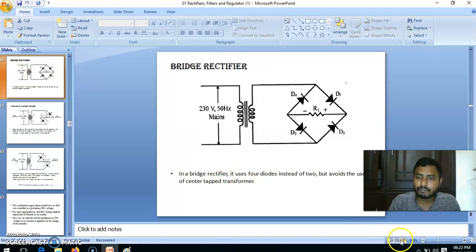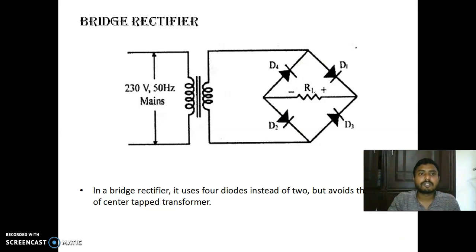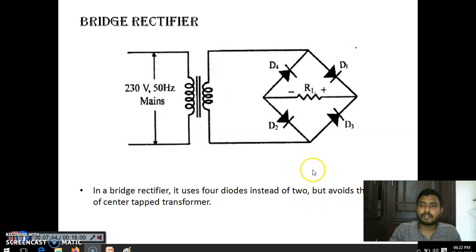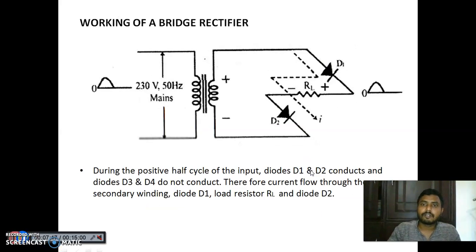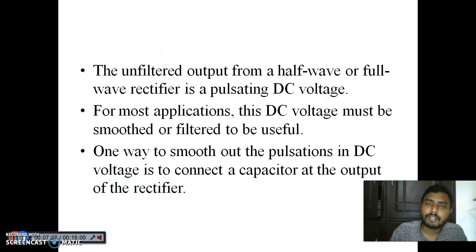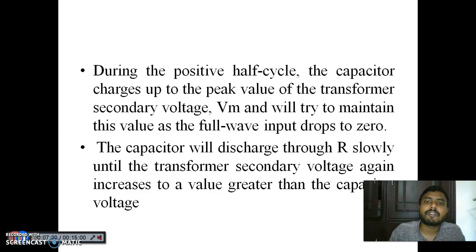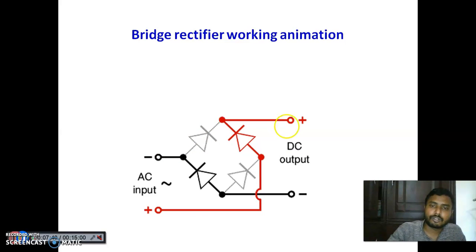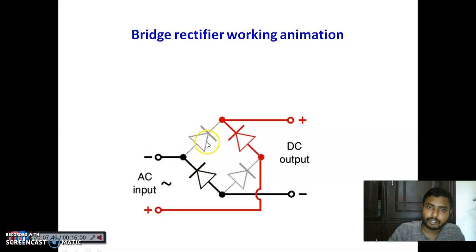So the same thing we were explaining — you can see here the bridge circuit. In the first half cycle it is like this, second half cycle it is like this, and in both cases the output current flows in the same direction, so it is converting AC signal to DC. This also shows which diodes are conducting at a time: D1 and D2 are conducting in the first half cycle, and D3 and D4 are conducting in the second half cycle.